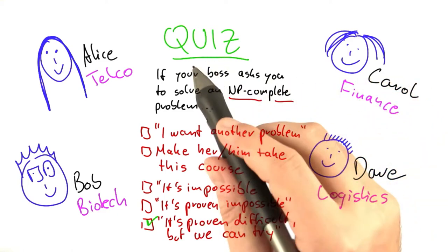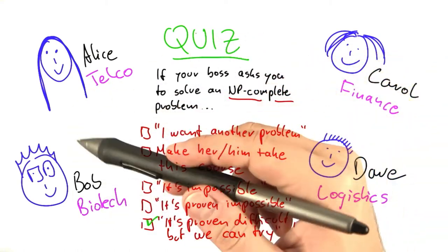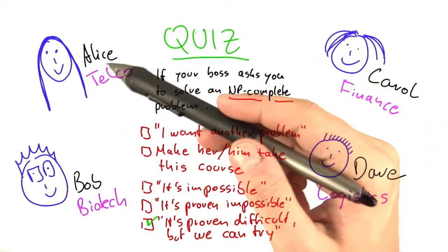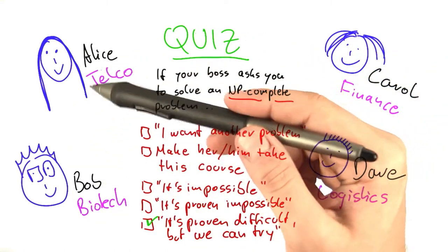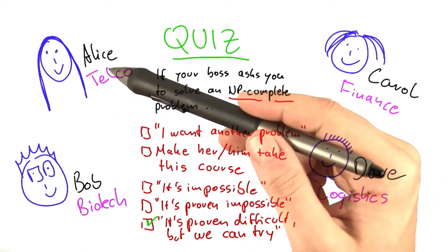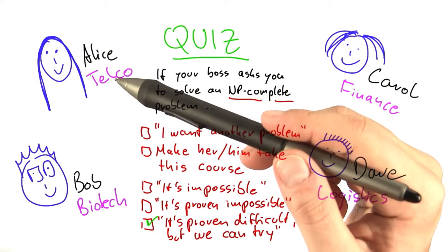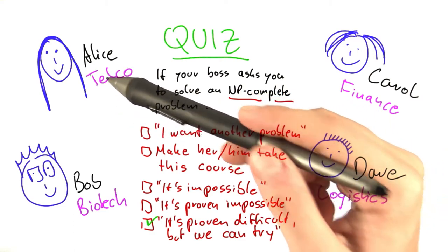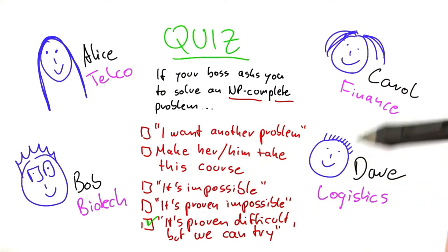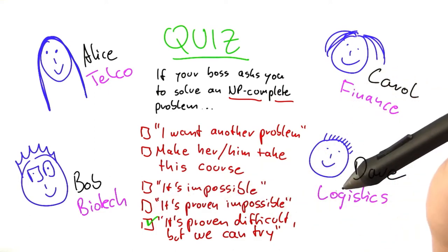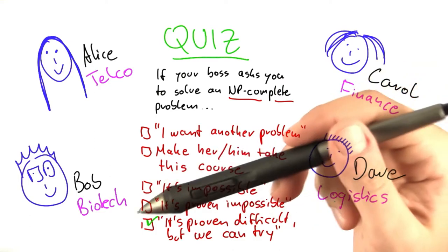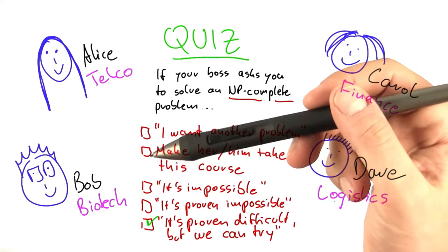The thing is this: there are so many NP complete problems that are practically relevant that over the past years, extremely clever algorithms have been developed for these problems. They have been developed for vertex cover, for clique, for independent set, for the shortest tour problem, for set, and so on.